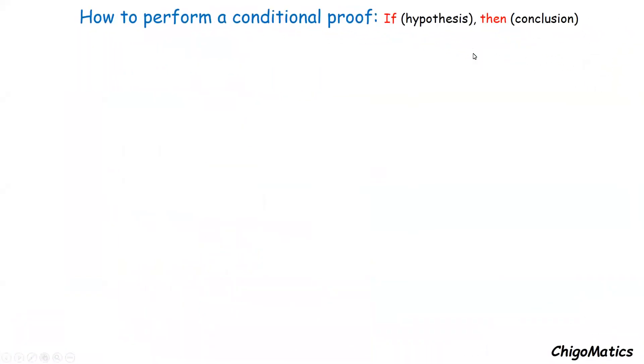How to perform conditional proof? If hypothesis then conclusion. To show if A then B, there are two basic methods.